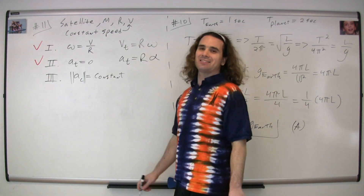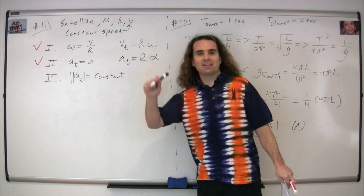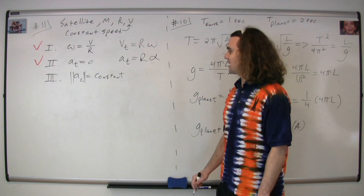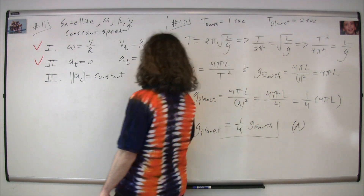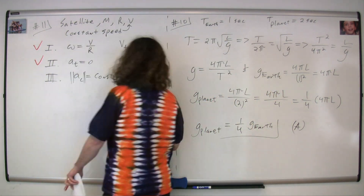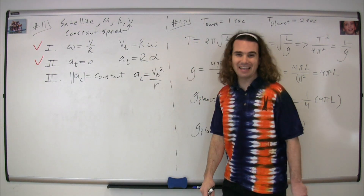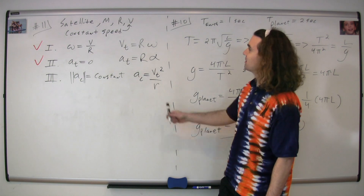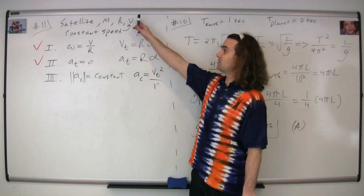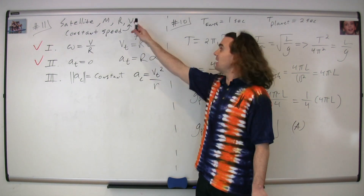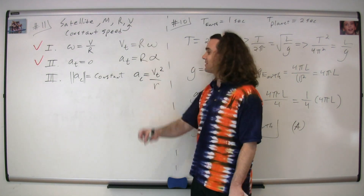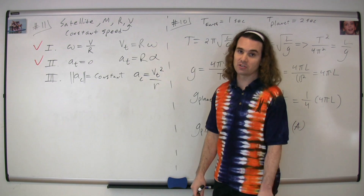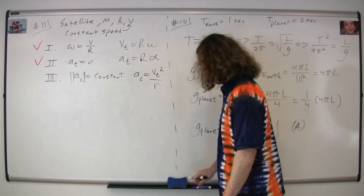And lastly, the magnitude of the centripetal acceleration is constant. Centripetal acceleration is equal to the tangential velocity squared divided by the radius. That velocity is constant and the radius is constant, therefore the centripetal acceleration is also constant.